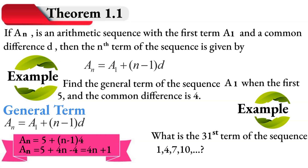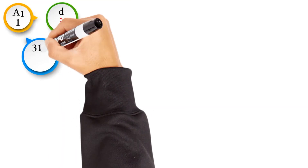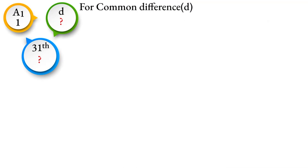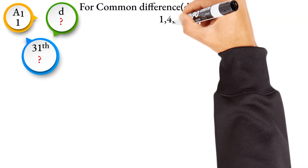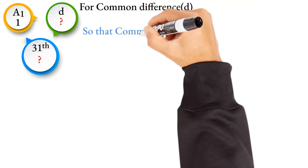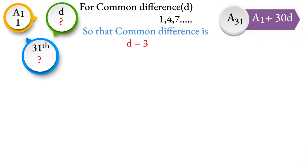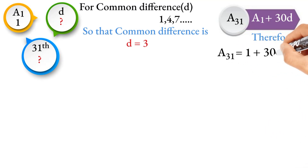When you look at this sequence, A1 is equal to 1, and D is equal to 3. So A31 is equal to A1 plus 30 times D — that is N minus 1, which is 31 minus 1, equals 30. So A31 equals 1 plus 30 times 3, which equals 91.